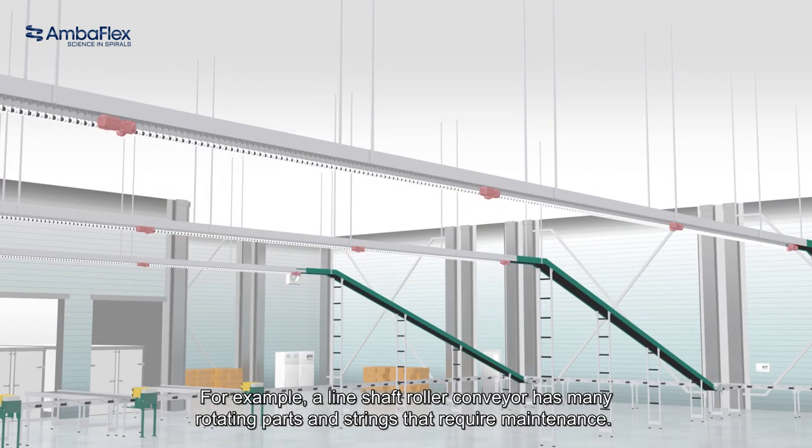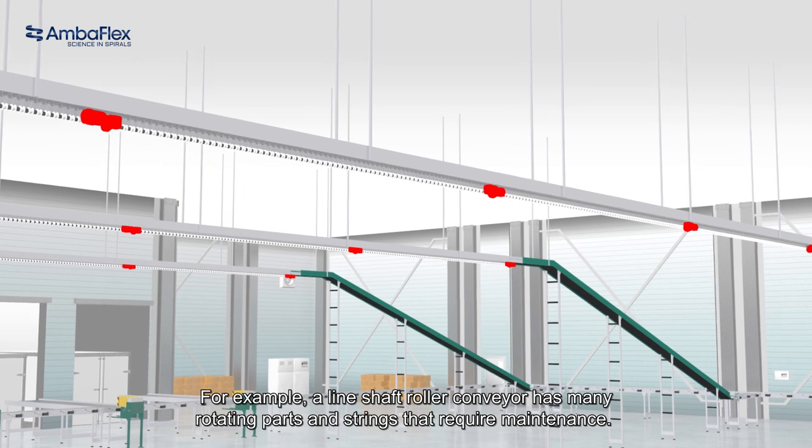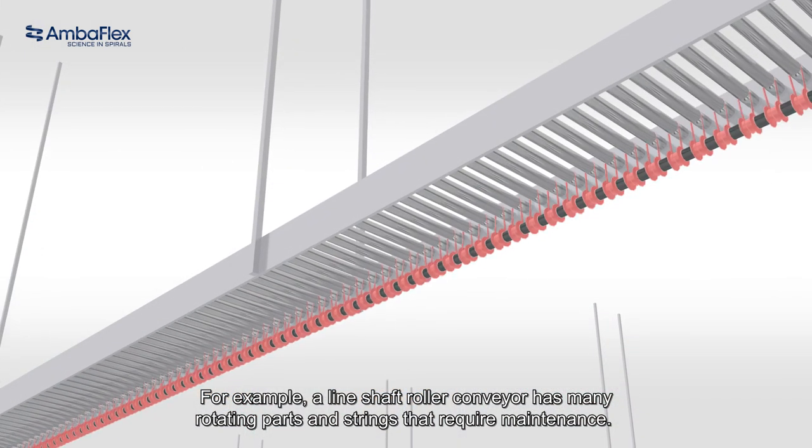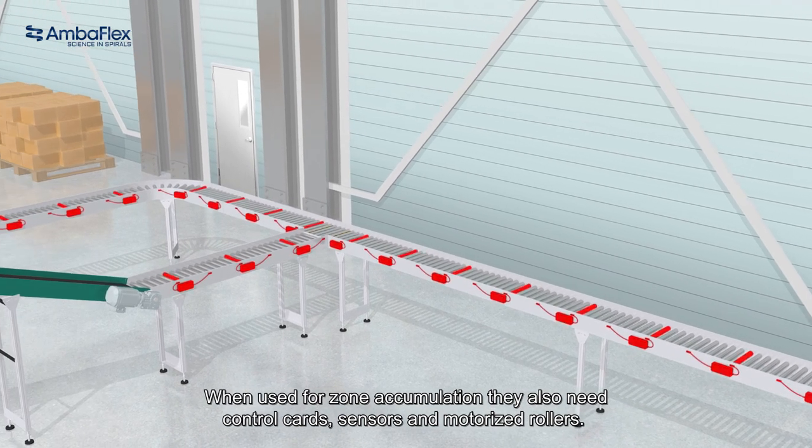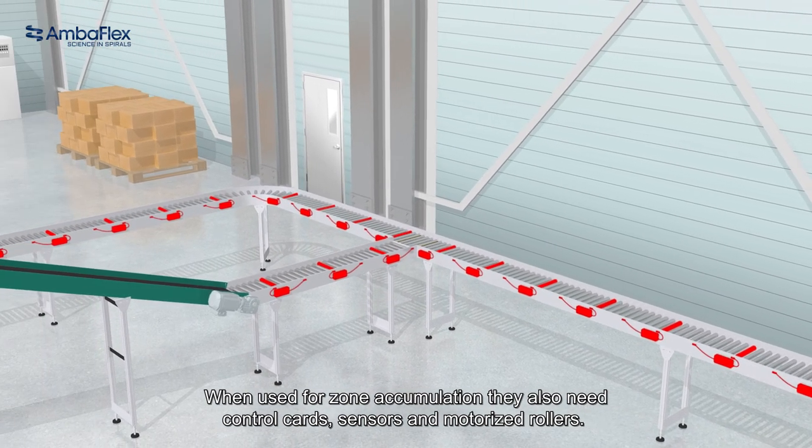For example, a line shaft roller conveyor has many rotating parts and strings that require maintenance. When used for zone accumulation, they also need control cards, sensors and motorized rollers.